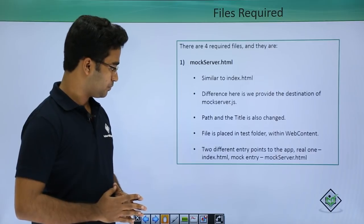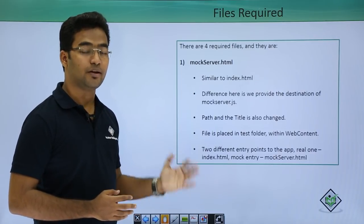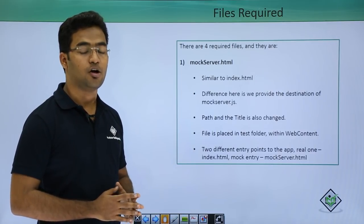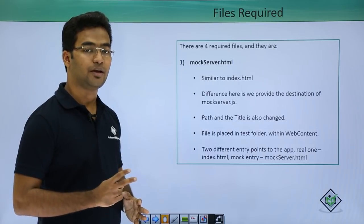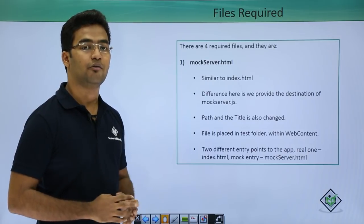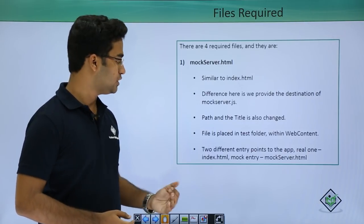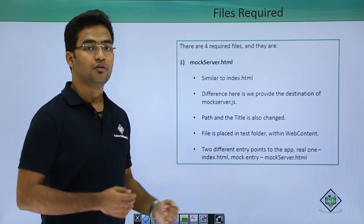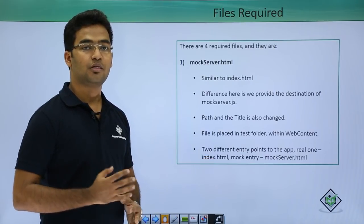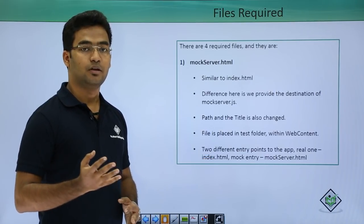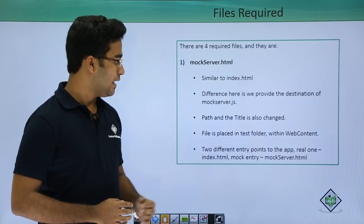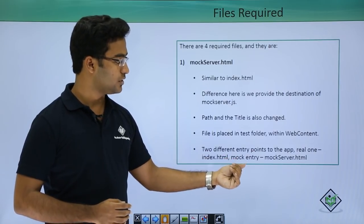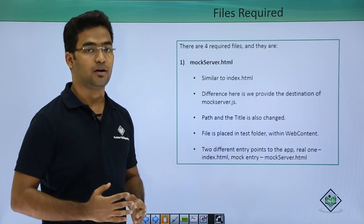From this point onwards, once we have created our mock server, we have two entry points into our web application. The first one is index dot html through which we could run the OData service we are getting, and through mock server dot html we could run our mock data.